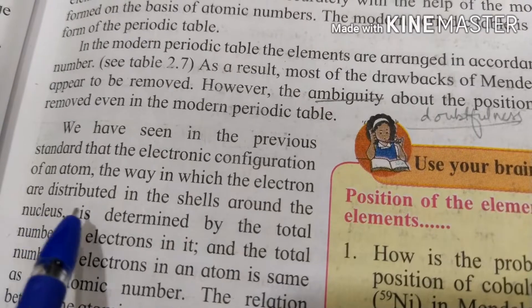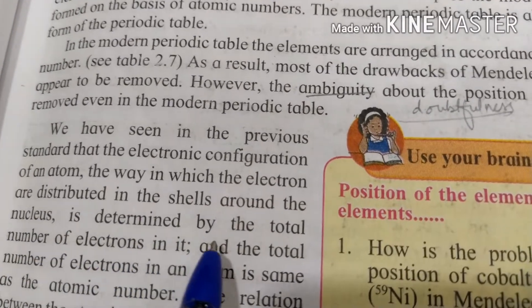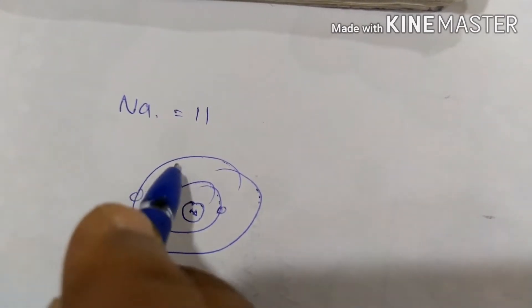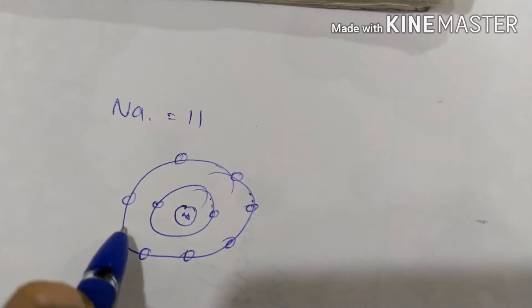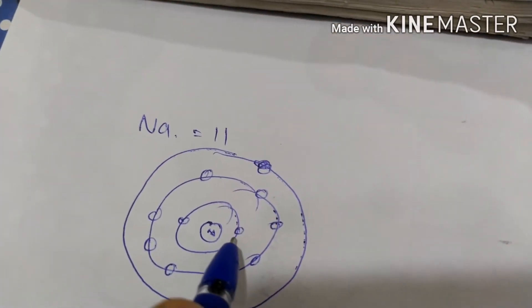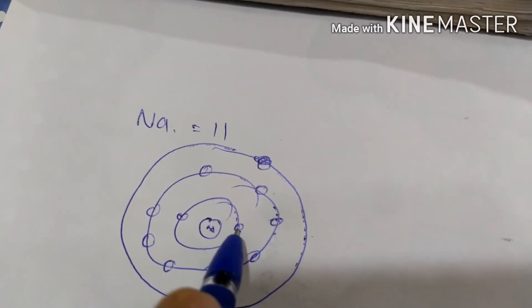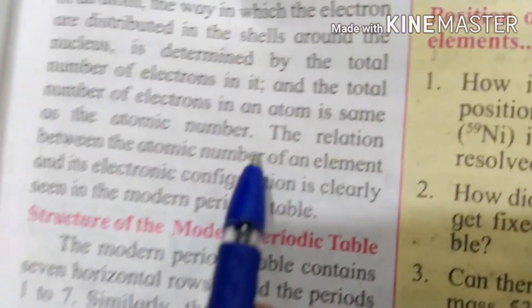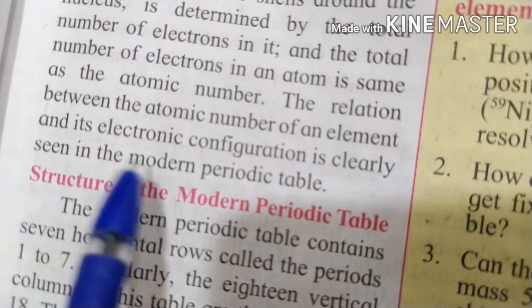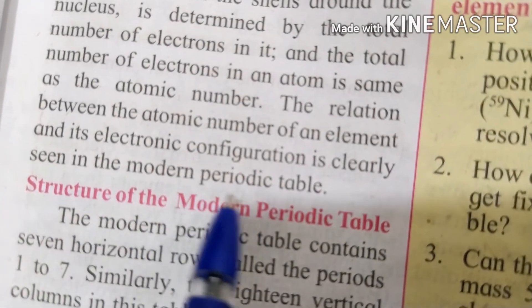The way in which electrons are distributed in the shells around the nucleus is determined by the total number of electrons in the atom — this is the electronic configuration. For example, sodium has atomic number 11: two electrons in the K shell, eight in the L shell, and one in the M shell. The total number of electrons equals the atomic number. The relation between atomic number and electronic configuration is clearly seen in the Modern Periodic Table.